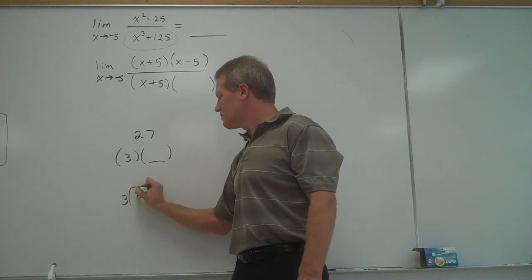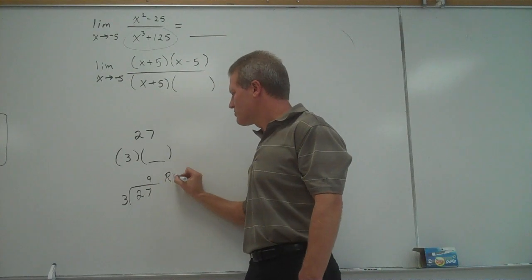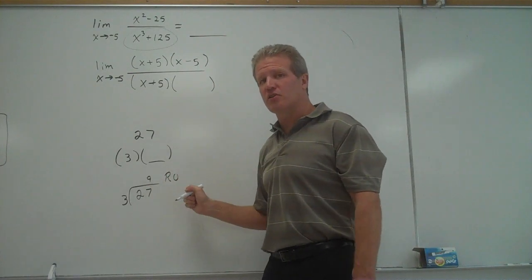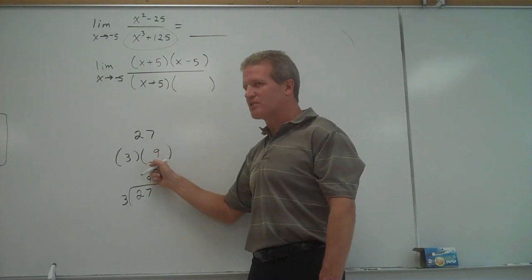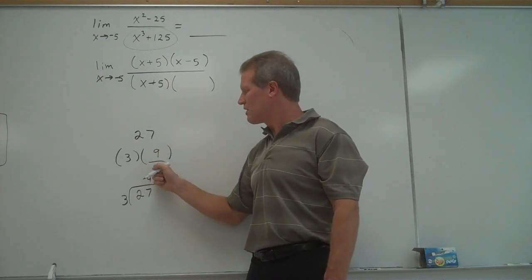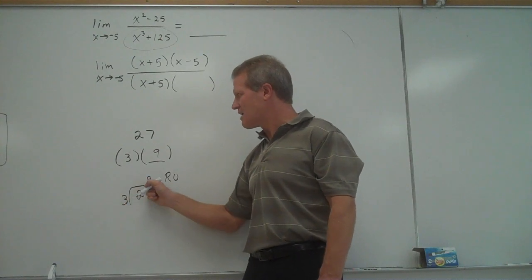27 divided by 3 would give you 9, with a remainder of 0. The remainder of 0 tells me that 3 goes into 27 exactly 9 times. So the missing factor is 9. And the remainder of 0 tells me that both 3 and 9 are factors of 27.